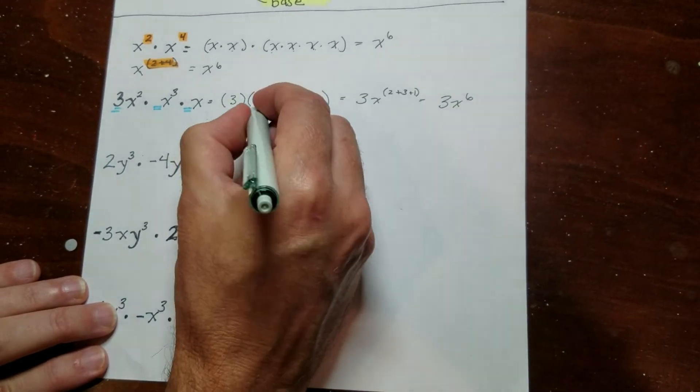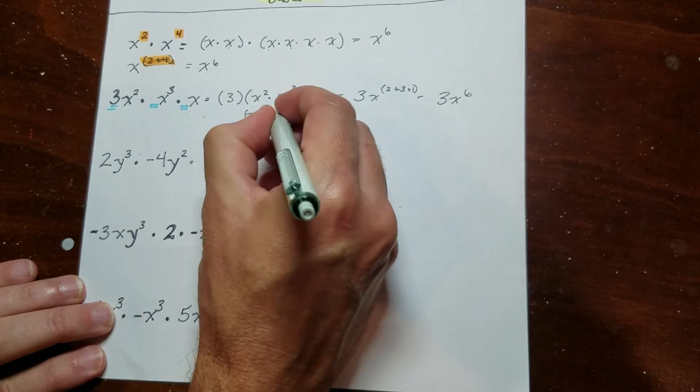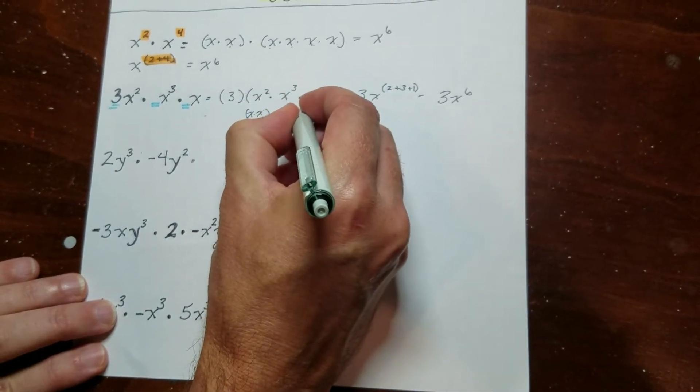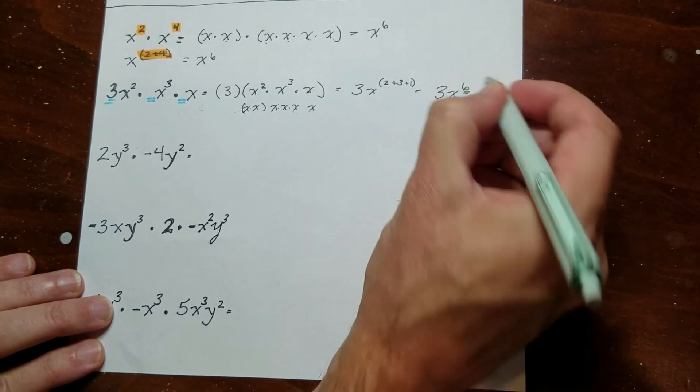The other way to do that, of course, is like I did up here, you could have always pulled this apart. So there's the 2. There's the 3 of them. And then there's the other one. And you count them all up. You get 6.